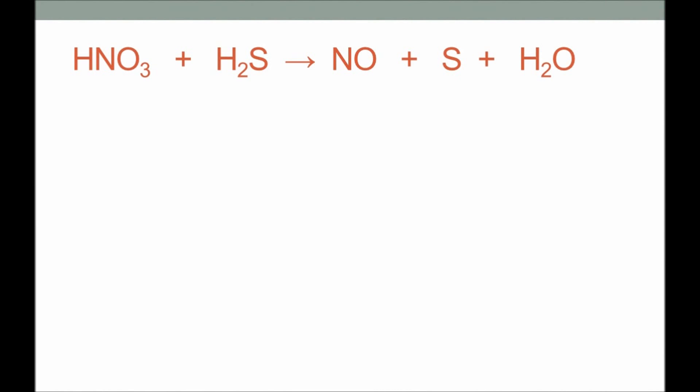Once you have done that, add these numbers as coefficients and you should have a balanced equation. We will discuss an example: the reaction between nitric acid and hydrogen sulfide to produce nitric oxide, sulfur, and water.